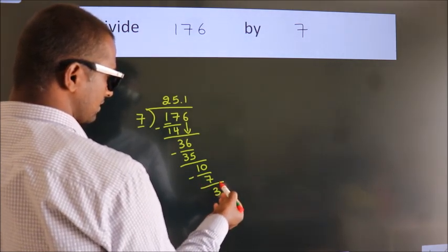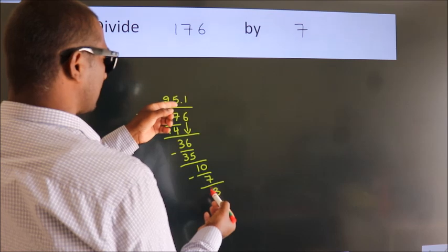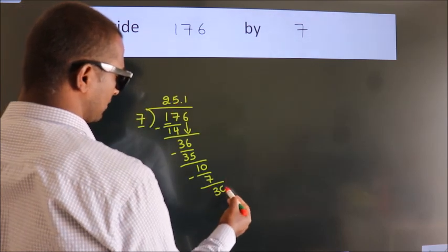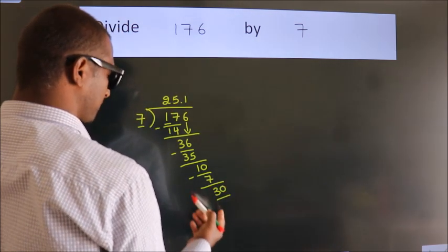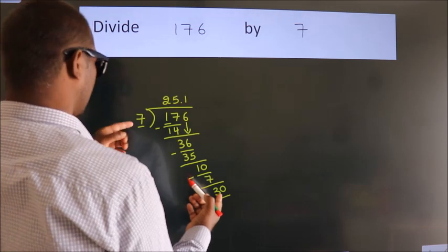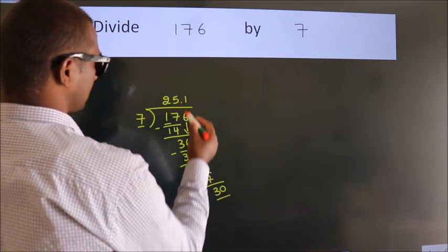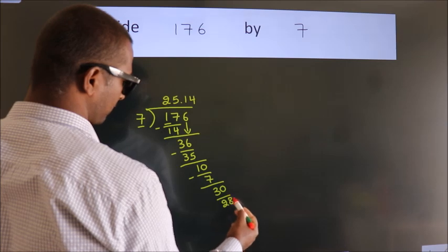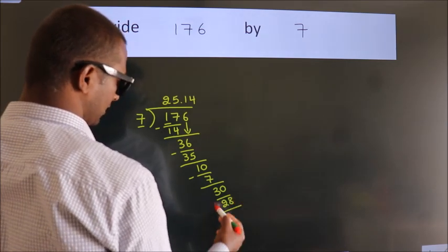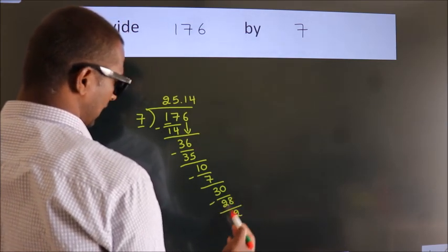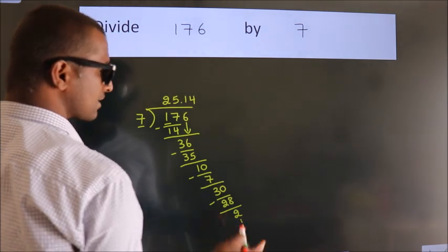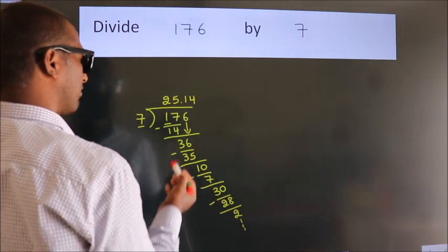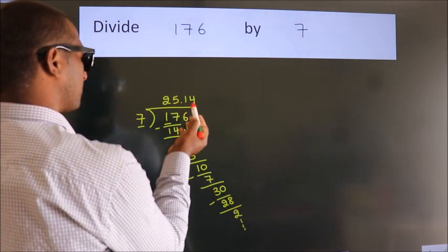After this, we already have the decimal. So directly take 0. So 30. A number close to 30 in the 7 table is 7 fours, 28. Now, we subtract. We get 2. And the division continues. It is enough if we do up to 2 decimal places.